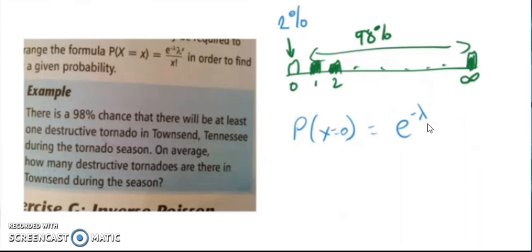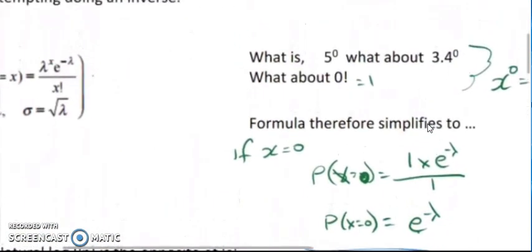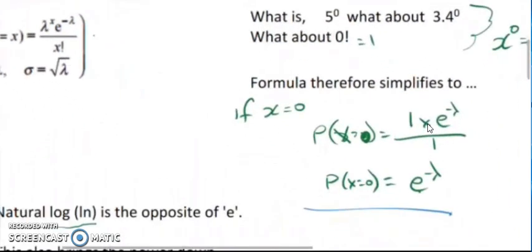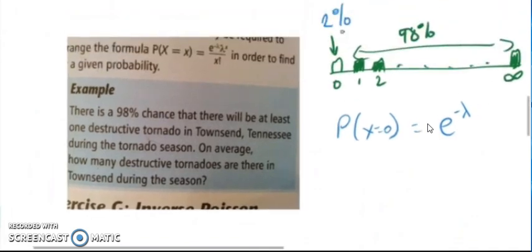So let's fill in what we know. So let's just double check our formula. E to the negative lambda. So the probability of x equals 0 is 2%. As a probability, we write that 0.02. E to the negative. Now the lambda here, on average, how many tornadoes are there during the season? That is the thing that we want to find out.